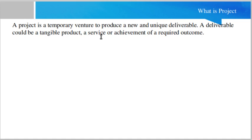Two components are very important and must be present in any project. First, it should be temporary — temporary means it will finish at some point; it should not be an ongoing activity. Second, it is always unique — unique means whatever the scope, complexity, or scenario, it is always a unique thing. So: temporary means it will start at some time and finish at some time, and unique means you are doing it for the first time.